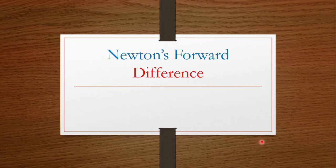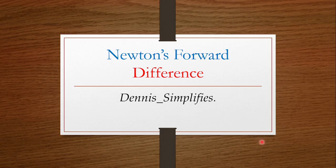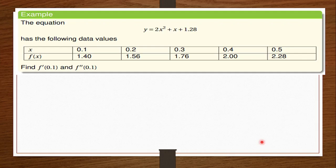What's going on, simplifiers! We are back again with another video on Newton's Forward Difference Method in numerical methods. Let's simplify this one as well. The equation we've been given is this, and we also have a table with the following data values. We're supposed to find the first derivative of 0.1 and the second derivative of 0.1. We've been given the equation y = 2x² + x + 1.28.